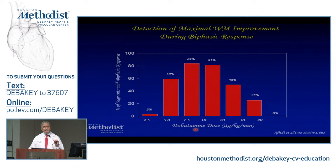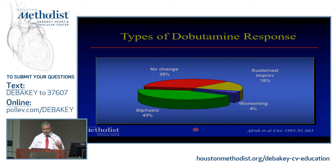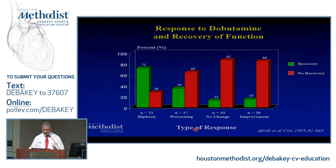If you give dobutamine at low and high doses, you may end up with four different responses: either no change; paradoxically sustained improvement even with high doses almost like a cardiomyopathy; pure worsening; and most importantly, a biphasic response — meaning improvement at low dose and then worsening with higher doses. The biphasic response is the most predictive of viability and predictive of improvement in function after revascularization. Most revascularizations in that study were with PCI.